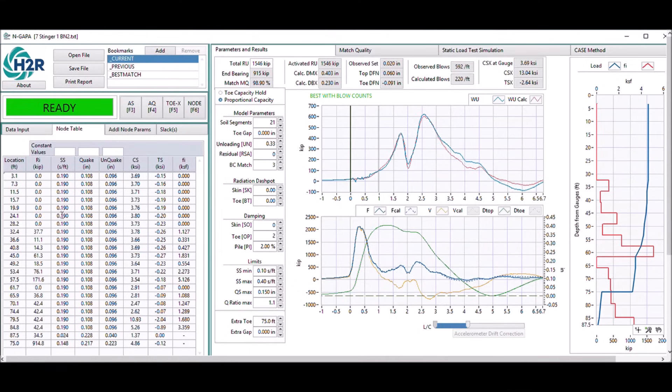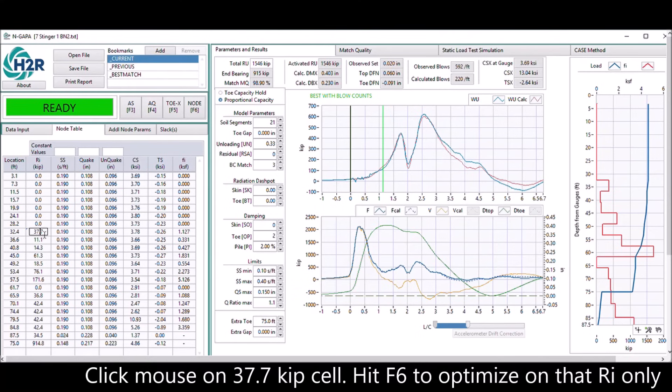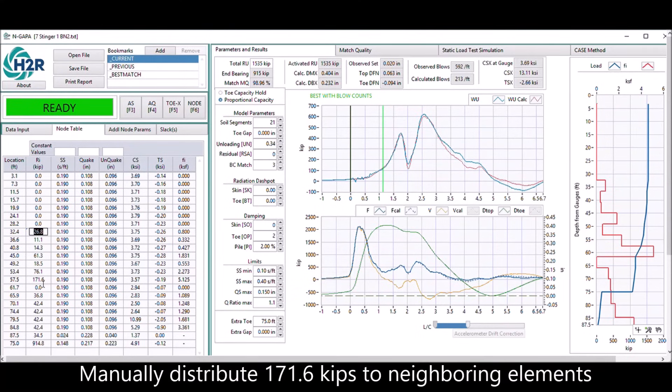On skin friction node, you can click the mouse there and hit F6 to optimize for the cell, or you can individually type the skin friction in, and you'll see the results reflected right away.